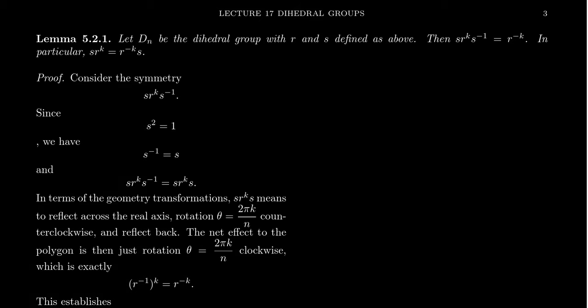In this video we're going to prove that the dihedral group is generated by the symmetries R and S. R is the rotational symmetry of the regular n-gon — we rotate counterclockwise by one click, precisely by the angle 2π/n. The map S is reflection across the horizontal axis, which coincides with the n-th roots of unity in the complex plane — reflection across the real axis, also known as complex conjugation.